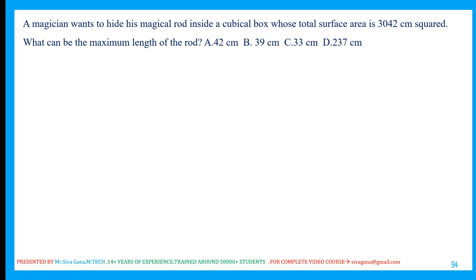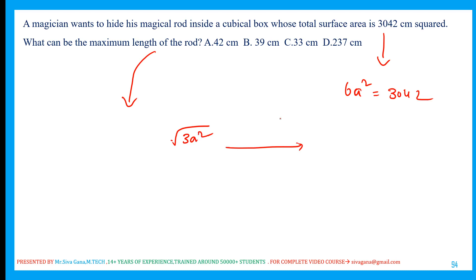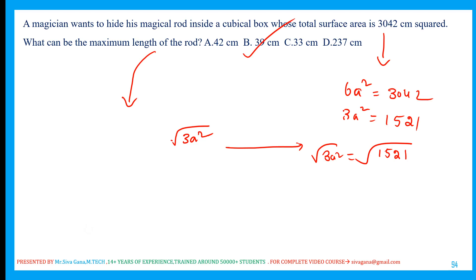A magician wants to hide his magical rod inside a cuboidal box whose total surface area is 3042. Total surface area of cube = 6A² = 3042, so 3A² = 1521. The maximum length of the rod inscribed in a cube = √(3A²) = √1521. Since the number ends in 1, the answer is definitely 39 cm. The formula for maximum rod length inscribed in a cube is √(3A²). Very important formula — a similar question was asked last year.